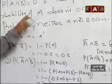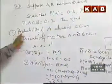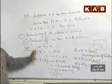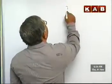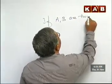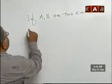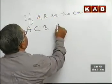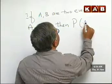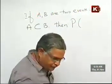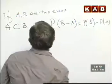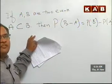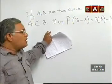So probability of A bar, which is probability of A does not occur, is 0.5. This concludes this particular problem. Now we will see the next question. If A and B are two events with A subset of B, then probability of B minus A equals probability of B minus probability of A. This forms the basis for the addition theorem of probability, which is very important.